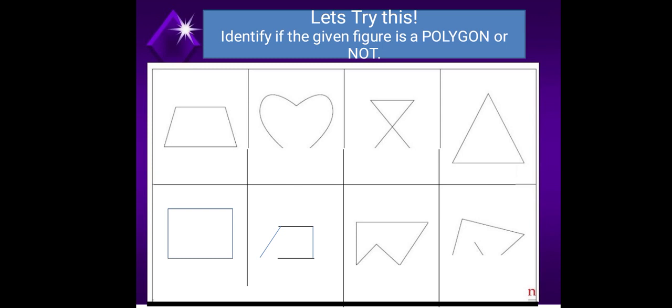Next image is the one that looks like a heart. Is this a polygon or not? Not. Why not? Because there's two reasons behind this. First, as we can see, it is not a closed figure because there is an open line here.